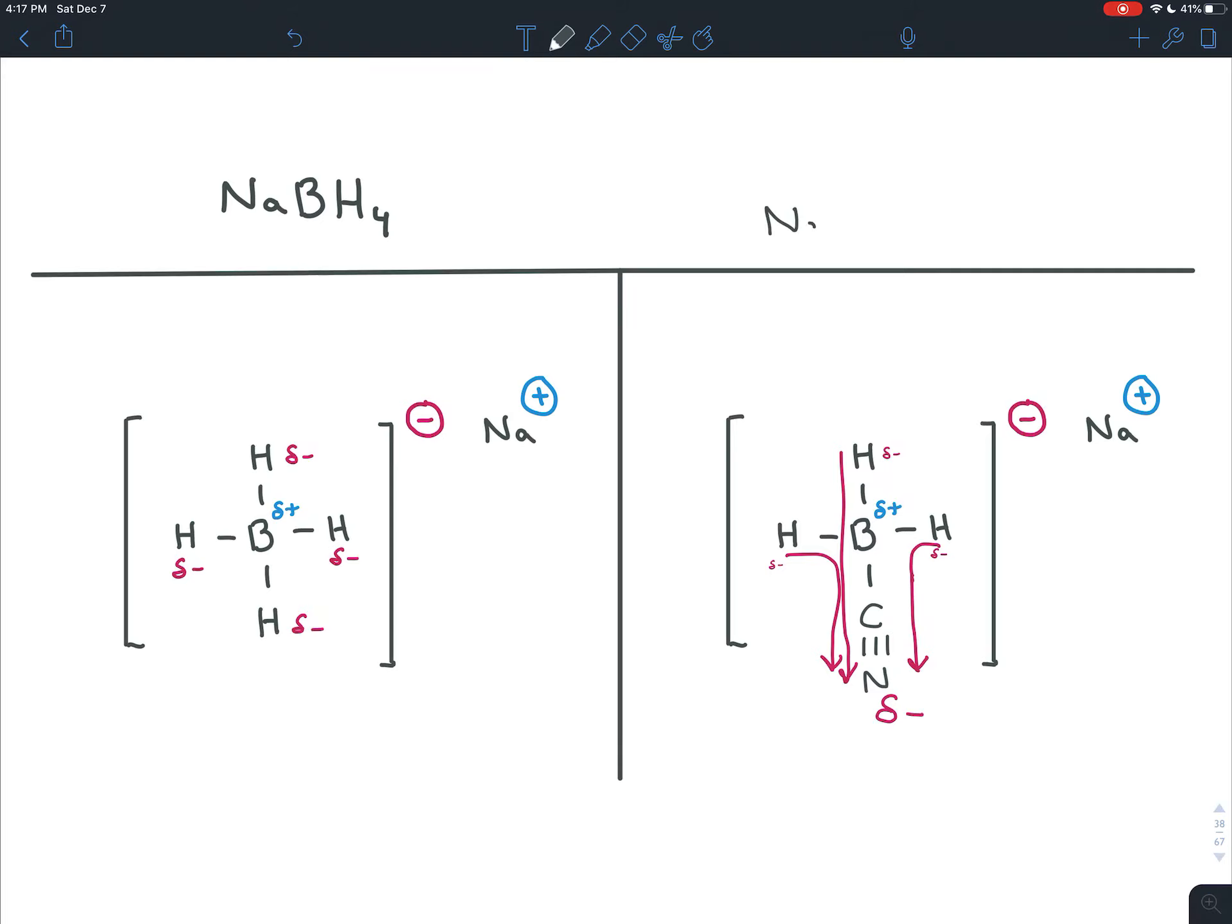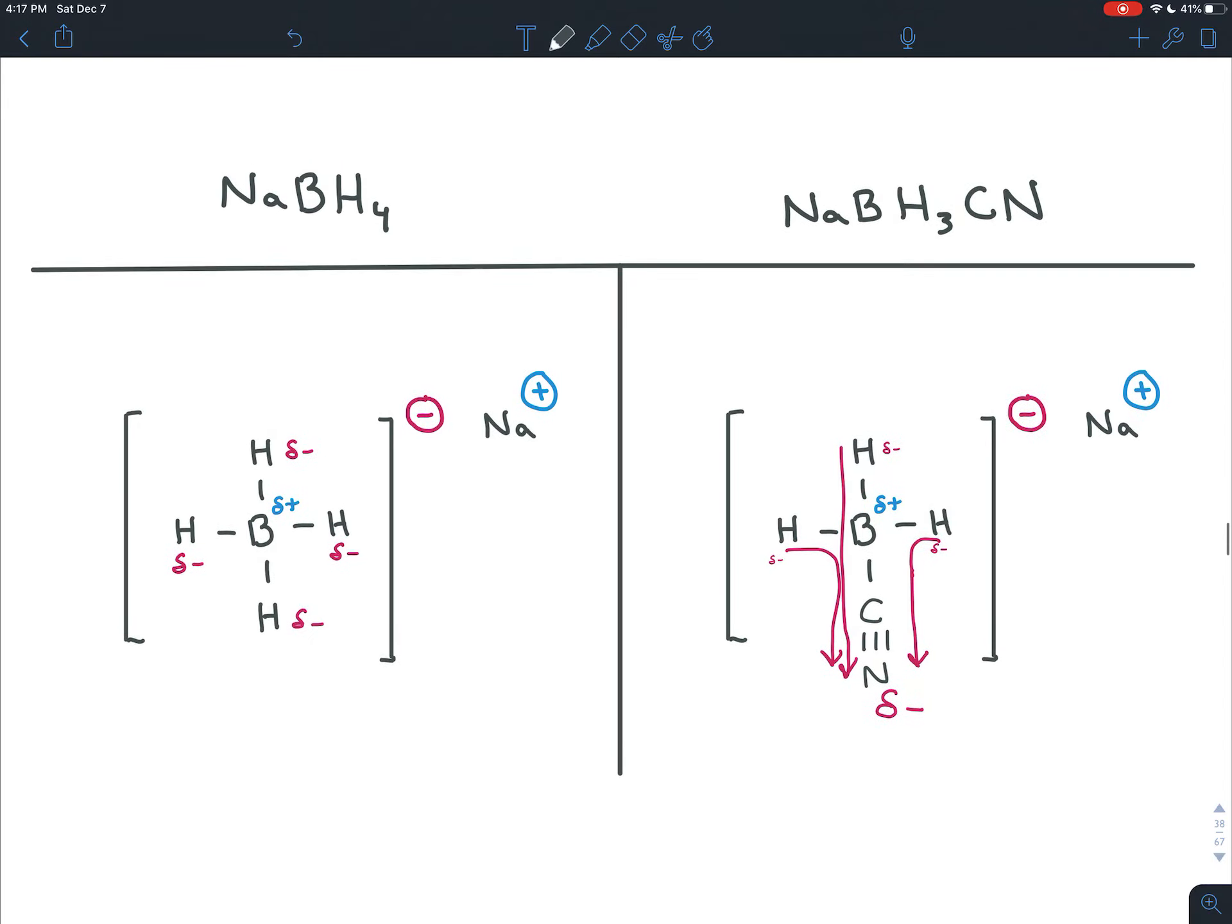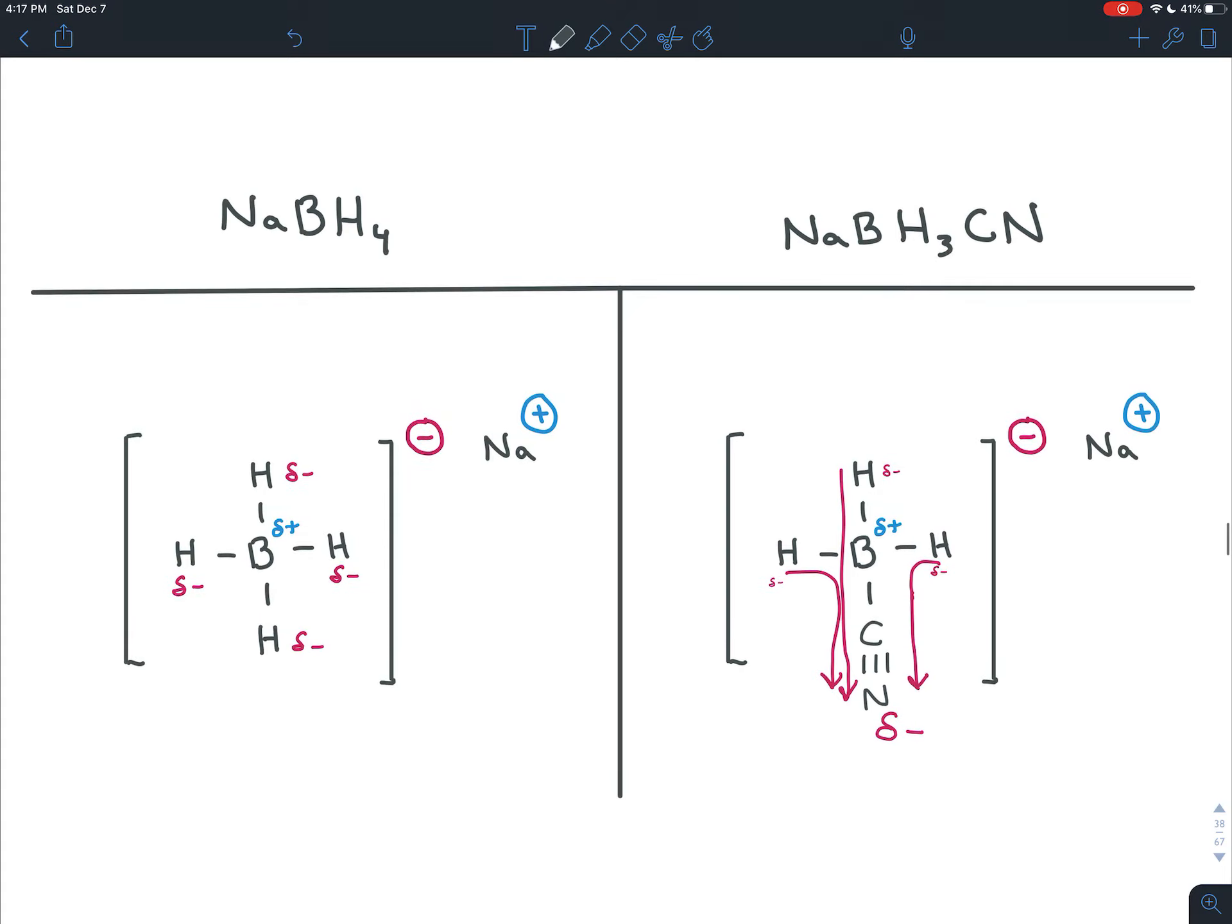This, by the way, is called sodium cyanoborohydride. So you'd have the sodium still. It's balancing the charge of this whole big ion. You still have the boron. You still have three hydrogens, but the fourth one was replaced by a cyano group, a nitrile. And so we have sodium cyanoborohydride.